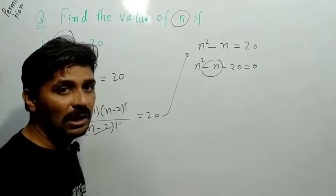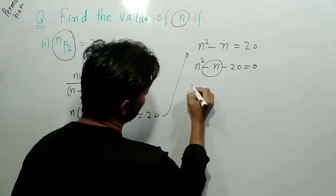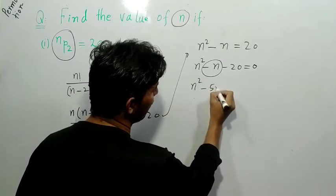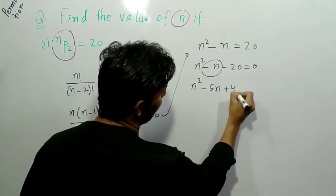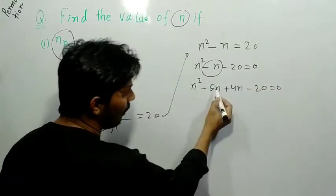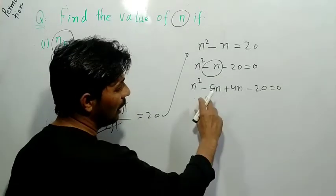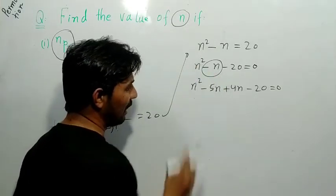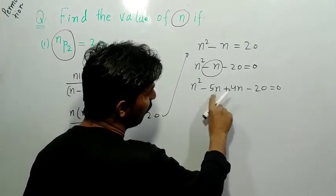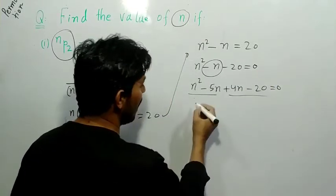For n² minus n minus 20, friends, we break the middle term in such a way that the product of first and last equals the middle term's sum. So friend, how do we solve this? It becomes friends, n² - if we put minus 5n plus 4n, and put minus 20, then what result? Friends, minus 5n plus 4n gives minus n, and minus times plus gives minus 20. n² into minus 20, friends, our equation is ready.